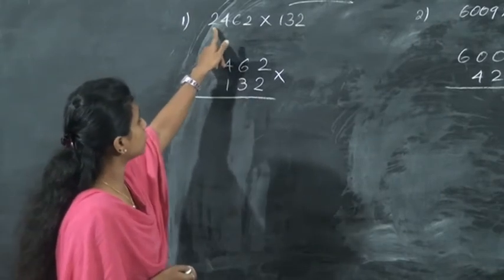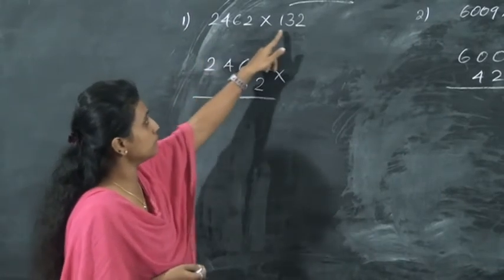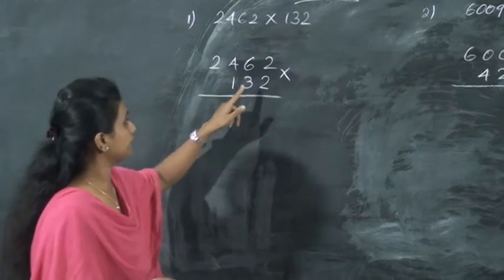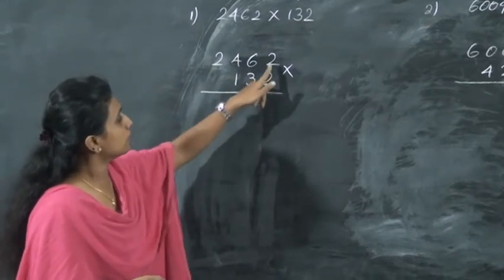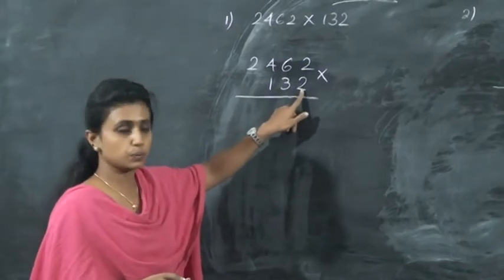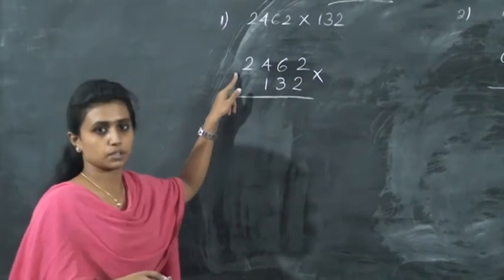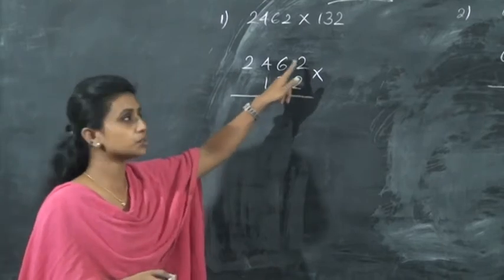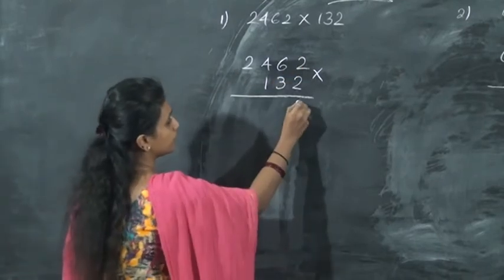Here, we want to multiply 2462 with 132. Now look here. I want to write it in columns. First, you want to multiply this digit 2 with all these numbers. So what is 2 twos? 2 twos are 4. Write 4 here.